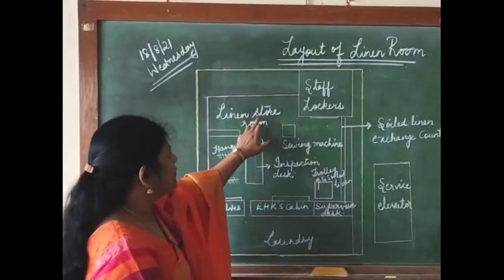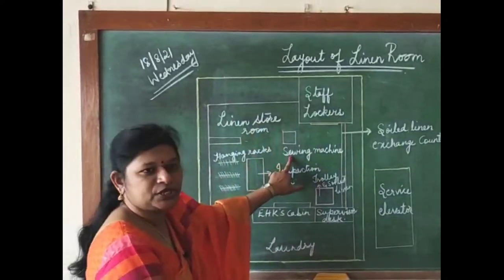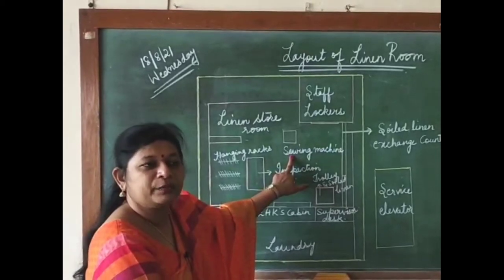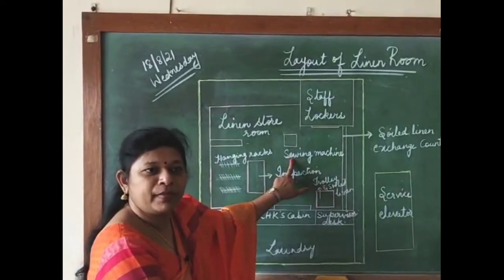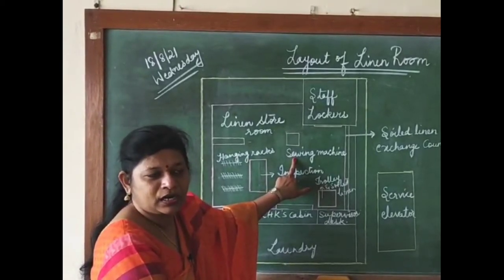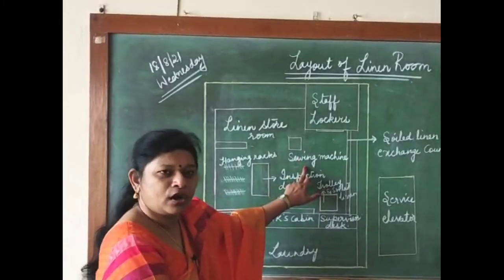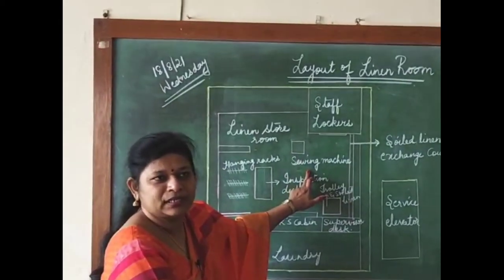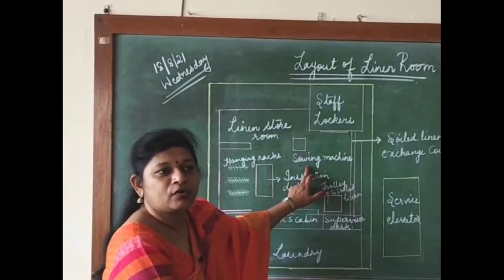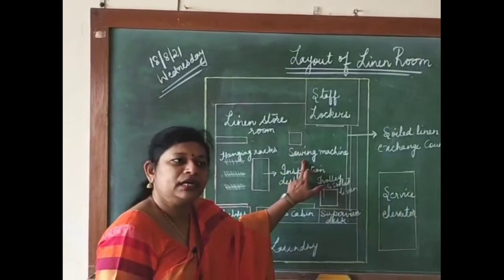Then you have a linen store room where all the linen is stored, and you have a sewing machine. In the theory class we covered the sewing machine and the person who handles mending and repairing, previously called a tailor. That person — whether male or female — is known as a seamstress. From today onwards, we will refer to the tailor working in 5-star hotels as a seamstress.